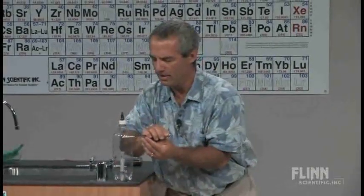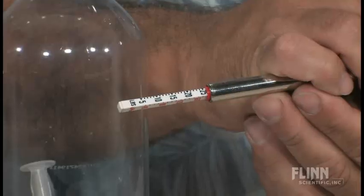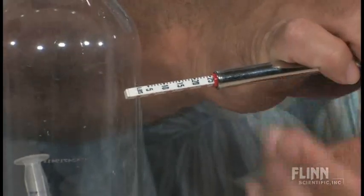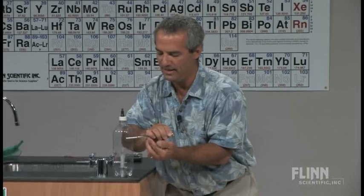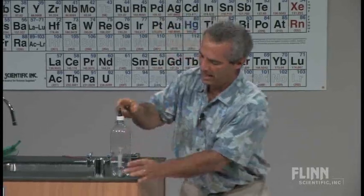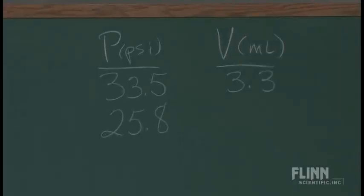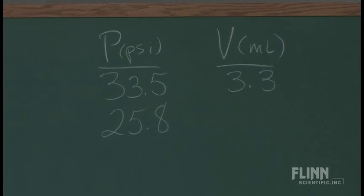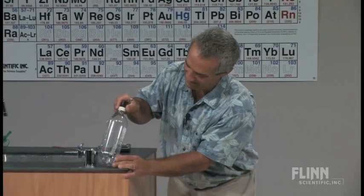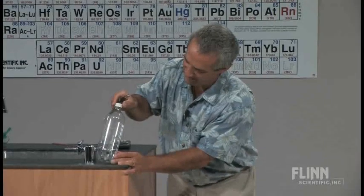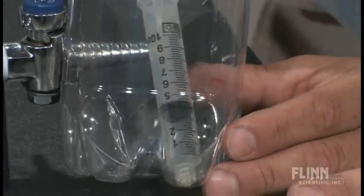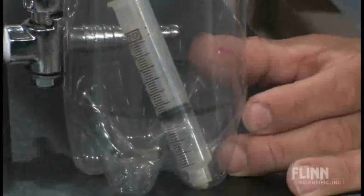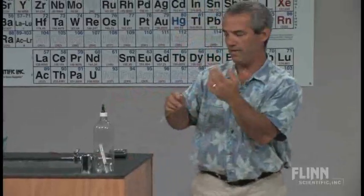Second pressure reading: I'm getting 25.8 psi. It's kind of difficult when part of the gauge is covered there, but 25.8 psi. And a volume reading of 3.9 milliliters. We're going to do this for five of them.